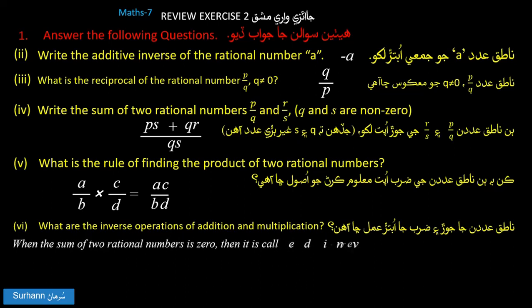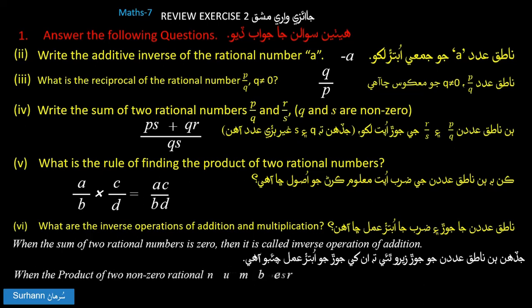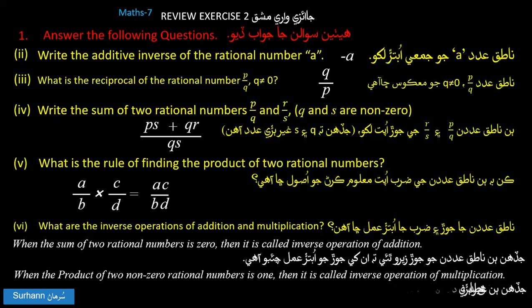When the sum of two rational numbers is 0, it is called the additive inverse. When the product of two non-zero rational numbers is 1, then it is called the multiplicative inverse.